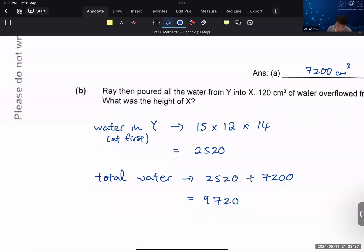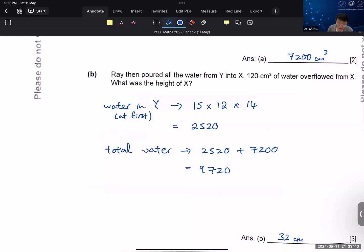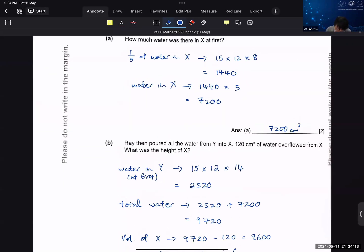So your total amount of water is 9720. If 120 cm³ overflow, it's because the container X cannot contain the amount of water. So you can find the volume of X by subtracting away the amount of water that overflow. The reason why there's an overflow is because the volume of the container is less than the volume of water. How much less? 120 less. And therefore, height of X is 9600 divided by 20 times 15.